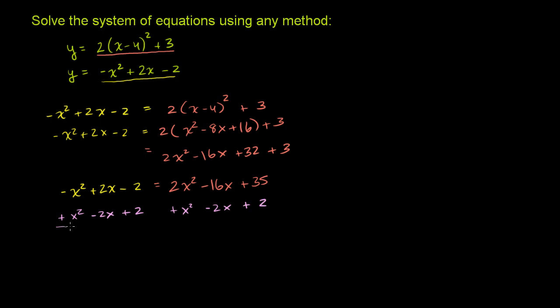We will get, on the left hand side, those cancel out. You're left with 0 is equal to 2x squared plus x squared is 3x squared, negative 16x minus 2x is negative 18x, and then 35 plus 2 is 37.